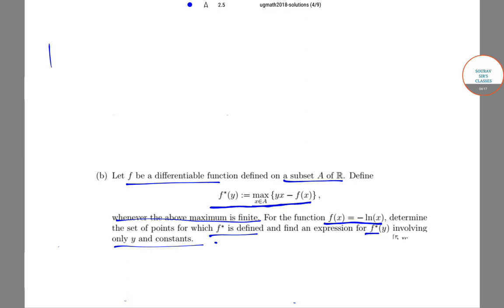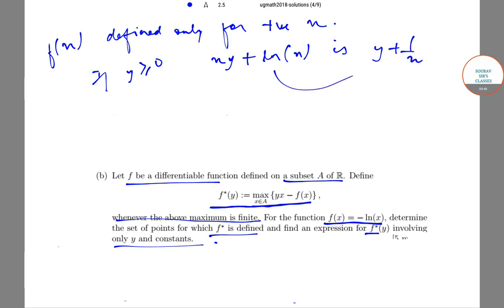Now first note that the function f(x) is defined only for positive values of x. Now if y ≥ 0, then the first derivative of xy + log(x) is y + 1/x, which is strictly positive for x > 0.